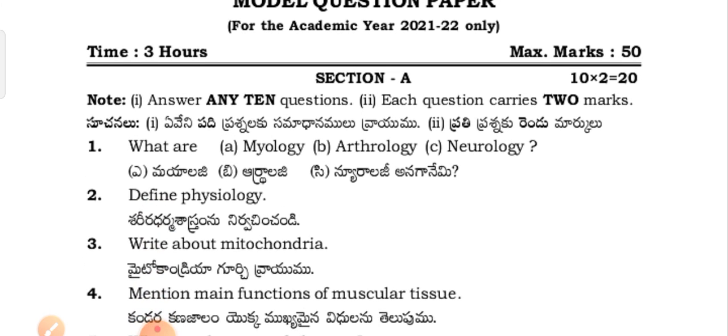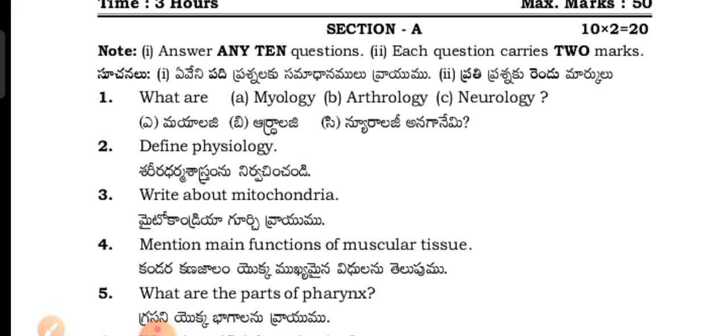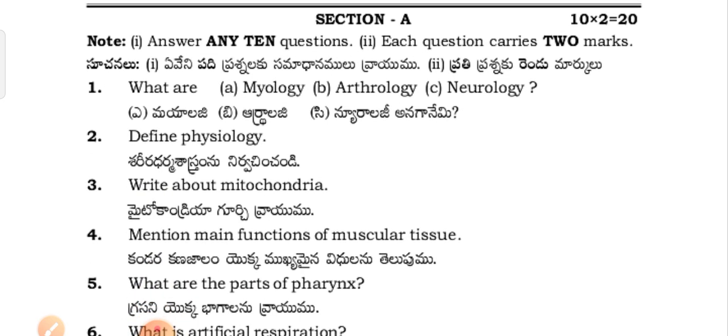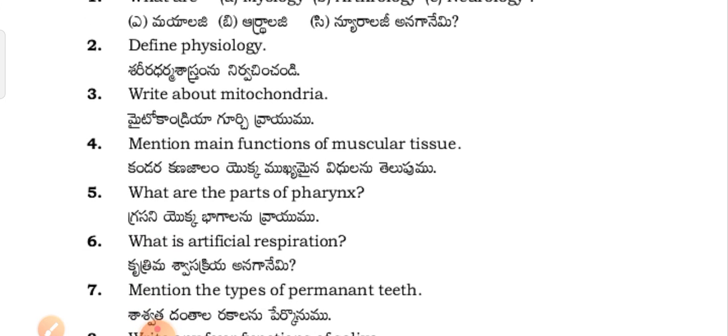Section A questions. What are myology, arthrology, and neurology? Myology, arthrology, neurology and academy.